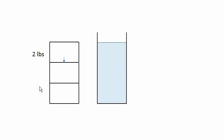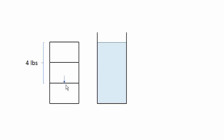This block weighs two pounds, so it exerts a downward force of two pounds on the block below it. This block is not moving, so there's a counterbalancing force of the lower block pushing against the upper block of also two pounds. These two blocks together weigh four pounds, so they exert a force of four pounds on this block, and likewise this block exerts a counterbalancing force of four pounds.